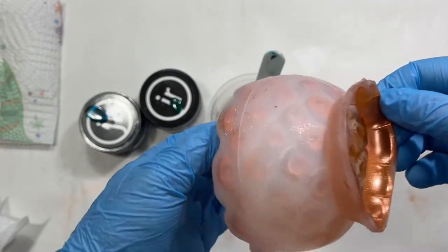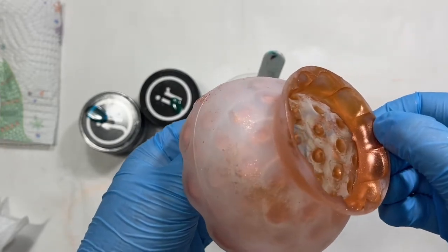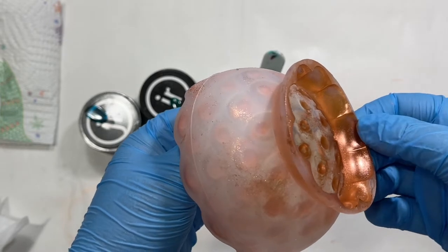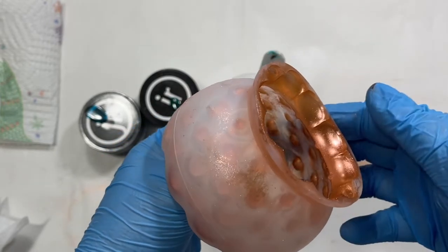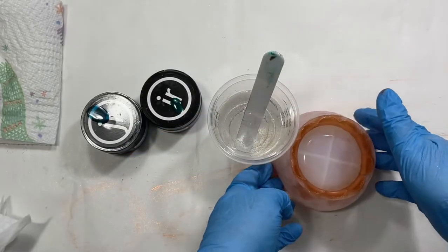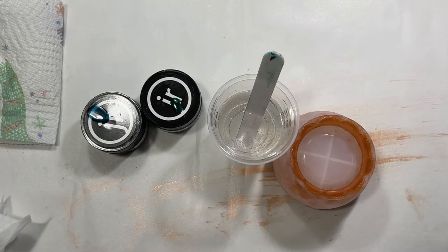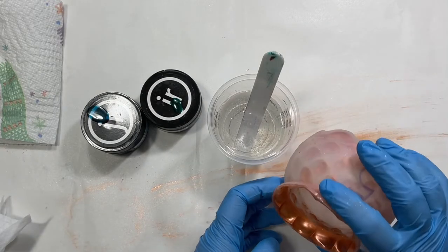If you don't want it messy and want it much more exact, what I do is take a q-tip, dip it in rubbing alcohol, and wipe where I don't want the mica to be. That usually cleans it up pretty good, but I'm okay with it being a little messy.